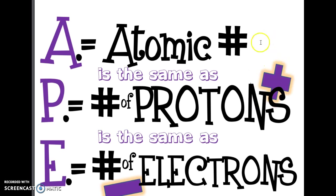Protons have a positive charge, and for an atom to exist in its neutral state — not positive or negative — it would have to have the same number of protons as electrons. So it has the same number of positive charges as negative charges. Oxygen has atomic number eight, so it has eight protons, and for oxygen to be neutral it therefore has eight electrons. Protons are positive, neutrons are neutral — it's exactly what it sounds like — and electrons are negative. Don't confuse neutron with negative; neutron means neutral, no charge.